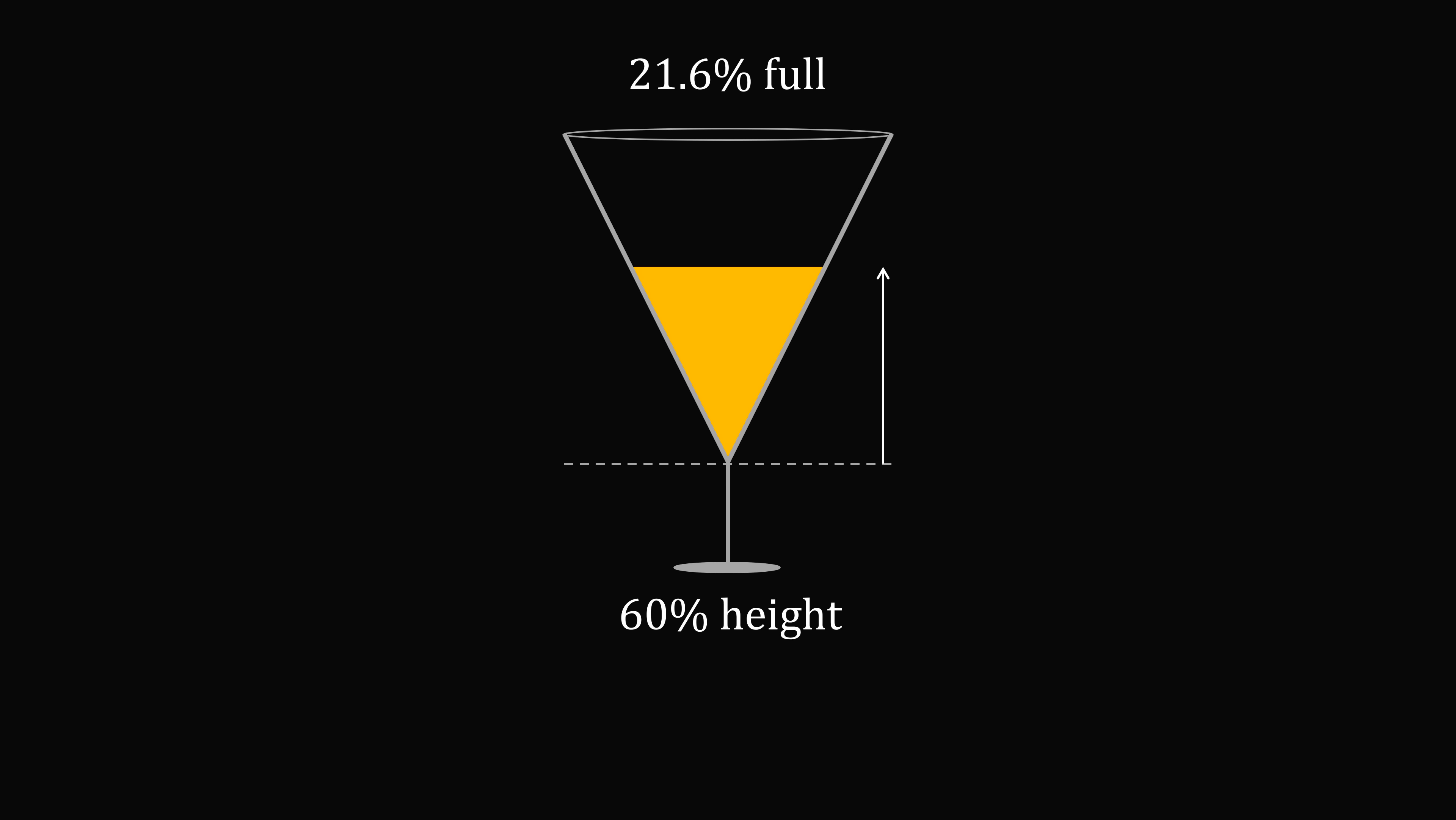A glass that is filled 60% by height is only 21.6% full. It would take about 5 glasses filled to this height to approximately be equal to 1 glass filled to the top. A glass that is filled to 70% of its height is only 34.3% full. It would take about 3 glasses filled to this height to equal 1 glass filled to the top.